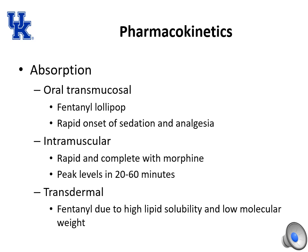Pharmacokinetics involves absorption, distribution, metabolism, and excretion. Common absorption methods are intravenous and PO (gastrointestinal). You can also have oral transmucosal absorption, such as with a fentanyl lollipop, resulting in rapid onset of sedation and analgesia. Intramuscular absorption results in rapid and complete absorption with morphine, with peak levels typically achieved in 20 to 60 minutes. Transdermal absorption — fentanyl is the common example — is used because of its high lipid solubility and low molecular weight.